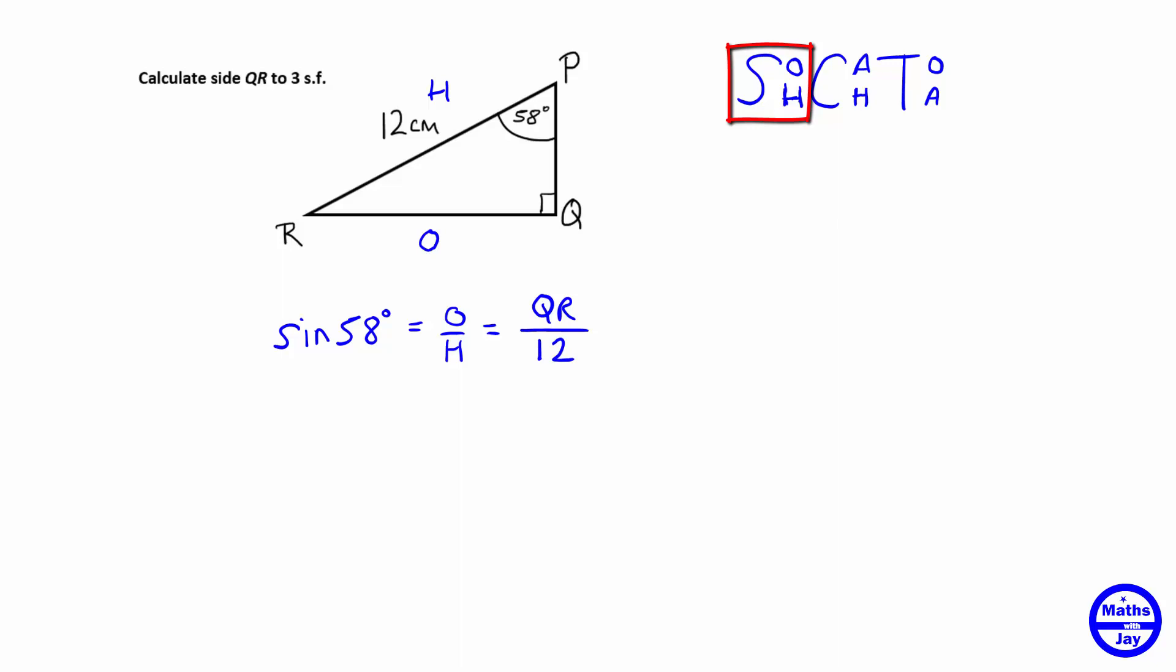And then we just need to rearrange this to make QR the subject, so we've got that QR divided by 12 is sine 58, so multiplying both sides by 12 gives us that QR is going to be equal to 12 times the sine of 58 degrees.